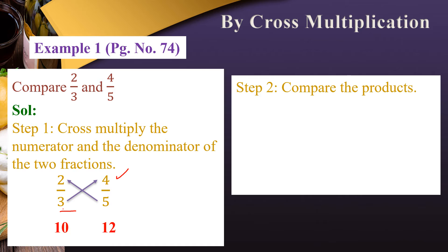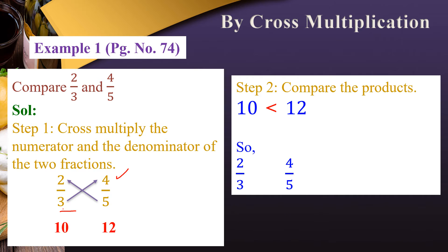Step 2: Compare the products. We have 10 and 12. Since 12 is larger, 10 is less than 12. Therefore, 2/3 is less than 4/5.